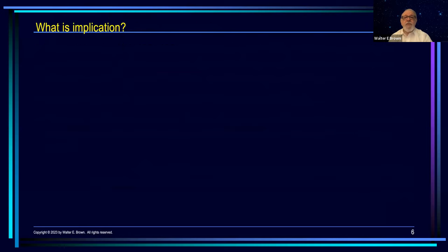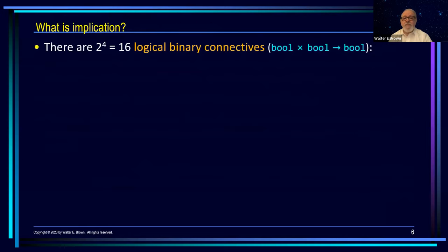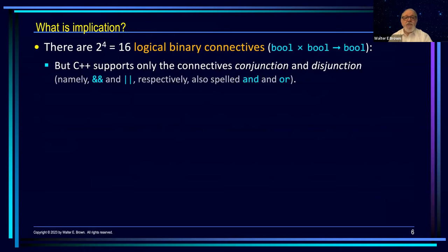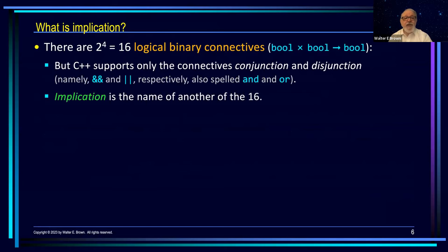So what is Implication? We all know that there are 16 so-called logical binary connectives, namely taking a pair of bools and returning a bool, but in C++ we only have two of them: conjunction and disjunction. Implication is the name of another one of these 16.